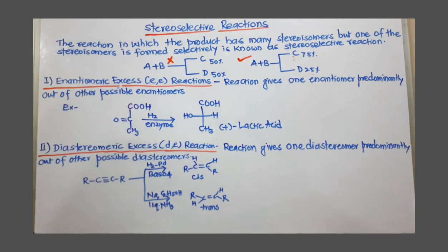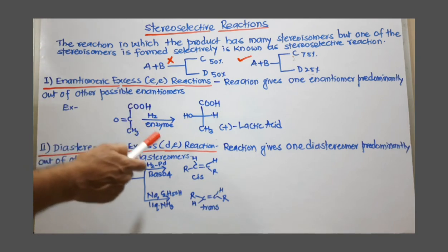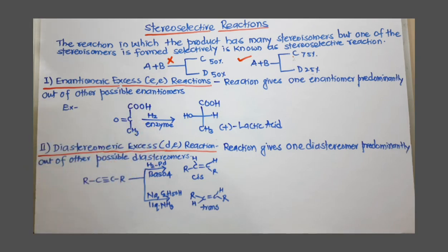Cis and trans are diastereomers. So one diastereomer is selected out of another possible diastereomer. This is called diastereoselective reaction. So this is all about stereoselective reactions. Thank you.